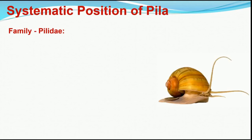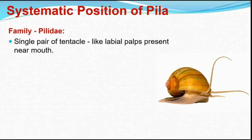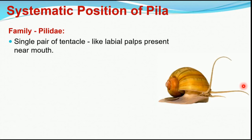They belong to Family Pileidae because they show presence of two pairs of tentacles and one pair of labial palps. The labial palps are structures present near the mouth that secrete a mucus-like secretion. This mucus entangles food particles and other nutrient particles from the water to produce a ball of food called a bolus. The labial palps near the mouth help in gathering suspended food particles from the aquatic environment.